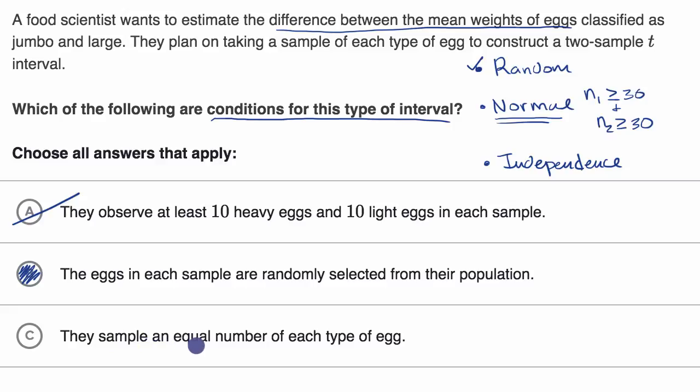They sample an equal number of each type of egg. This is a common misconception that whether we're dealing with means or proportions, when we're thinking about the difference between means or the difference between proportions, somehow your sample sizes have to be the exact same. That is not the case. Your sample sizes do not have to be the exact same. So we would rule this out as well.